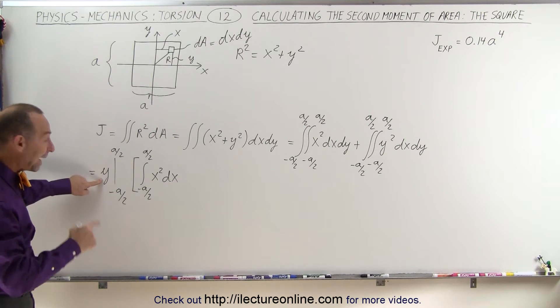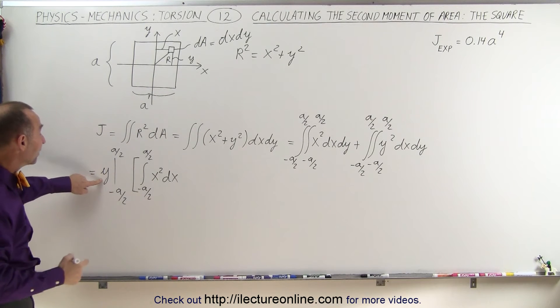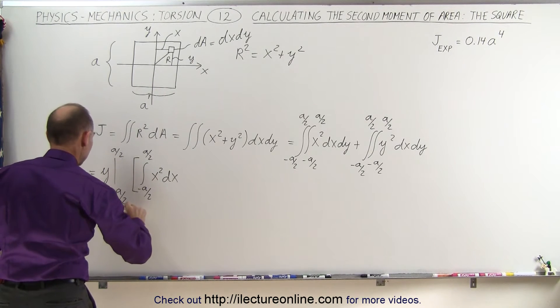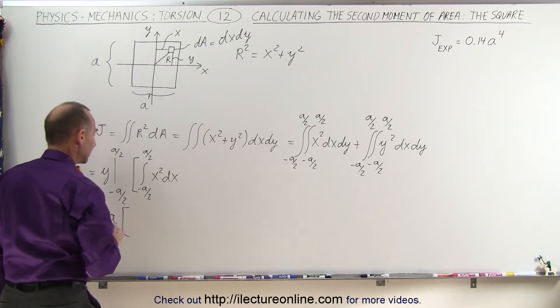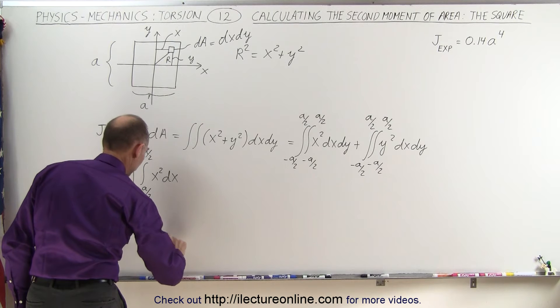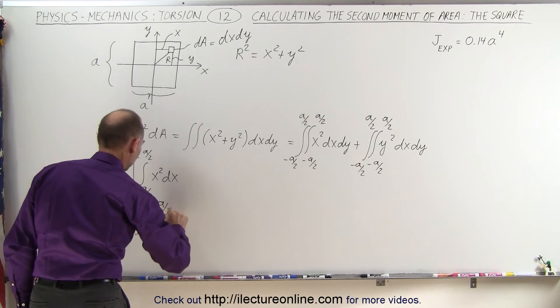we get positive A over 2 minus negative A over 2, which is really like adding the 2, so this becomes equal to A times, when we integrate this, we get x cubed over 3 evaluated from minus A over 2 to positive A over 2.